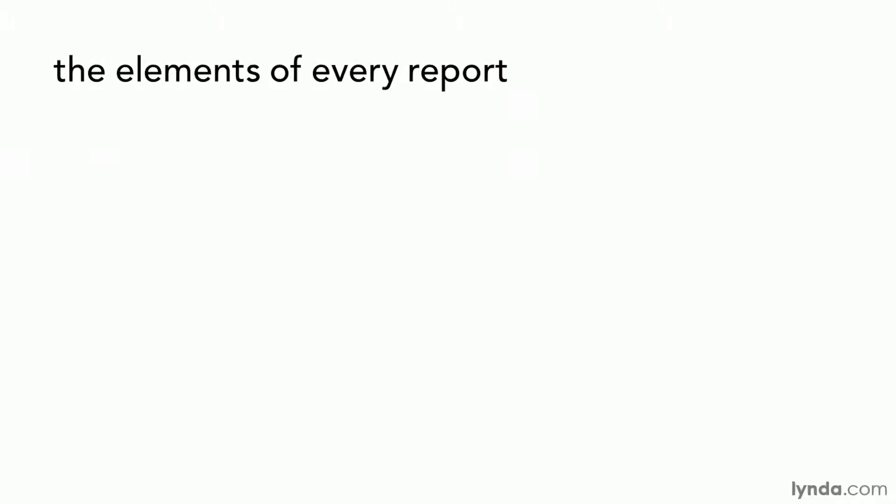We're going to jump into creating reports in just a second, but I've got one key concept to cover first so that when we do jump in, things will make a lot more sense. Every report you make in Reporting Services will require that you provide three elements — three distinct kinds of information — in an order I'll describe as the where, the what, and the how.